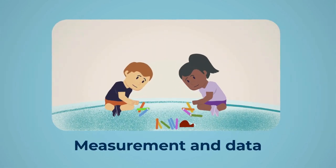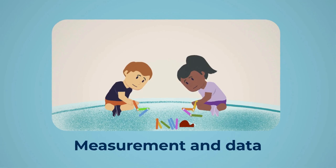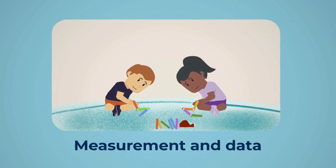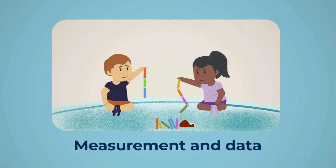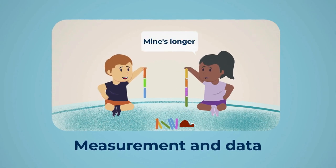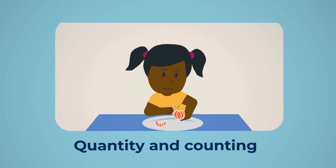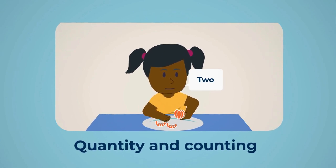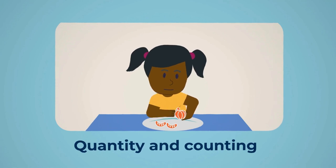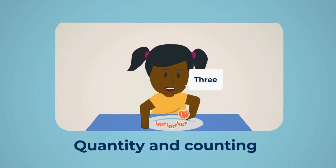Measurement and data involve understanding units of measurement and using mathematical knowledge to answer simple questions by collecting, interpreting, representing and communicating information. Quantity and counting relate to naming numbers in sequence and connecting them to quantities, as well as using actions, objects or numbers to symbolise these quantities.